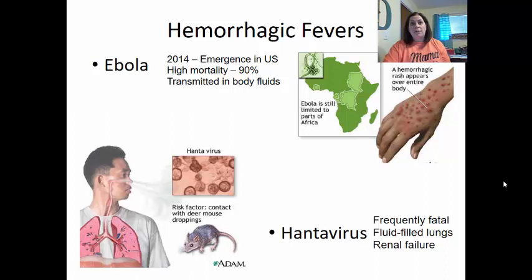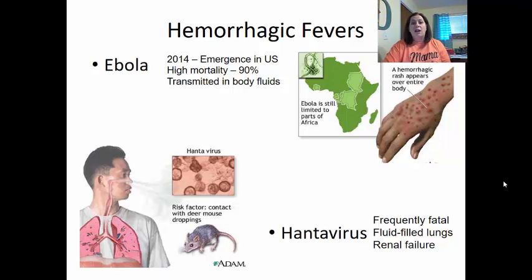Hantavirus is carried by deer mice and is found in their droppings. When mouse droppings are in a garage and the area is swept, the droppings get put into the air as dust. Breathing that in causes Hantavirus infection in the lungs. It is frequently fatal because fluid fills the lungs and it also causes renal failure, leading to massive edema and swelling, particularly in the lung area. Treatment involves putting the individual on a respirator to assist breathing and administering antivirals to help fight the infection.